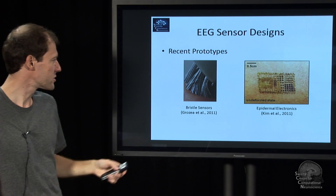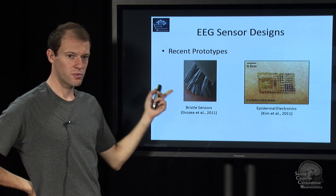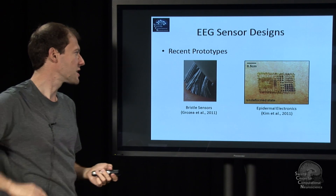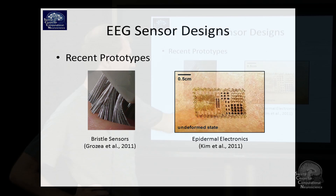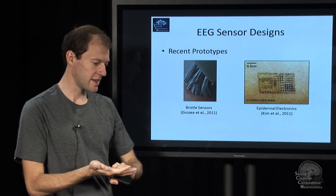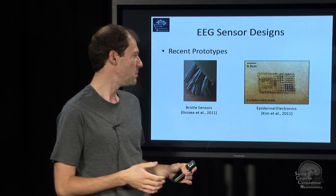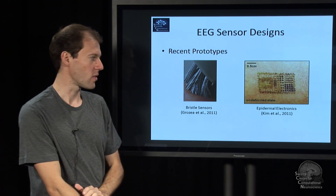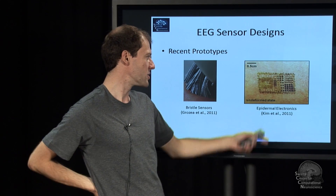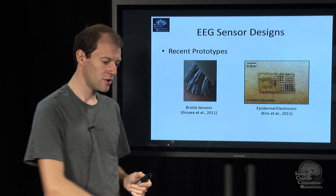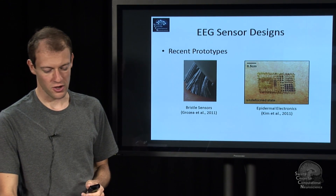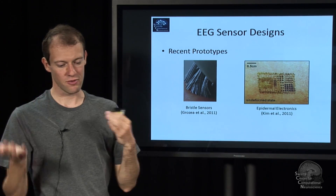There are even newer sensors called bristle sensors, which are little bristles like a toothbrush. They have a much higher chance of getting through the hair, although they can be a little itchy after a while. And here's a prototype design that made a big splash in the news: so-called epidermal electronics — a whole circuit printed on a tattoo-like base. You put it on your skin, it stays there, deforms with your skin, and can carry coils for power transmission and more. With these designs you can place lots of electrodes without the daily hassle of setting everything up.